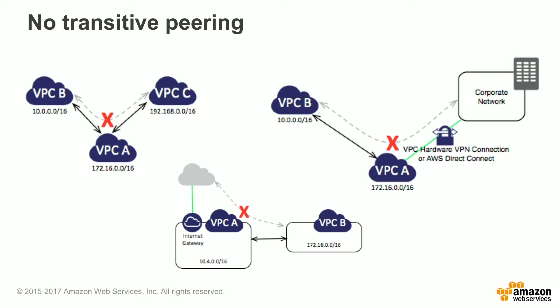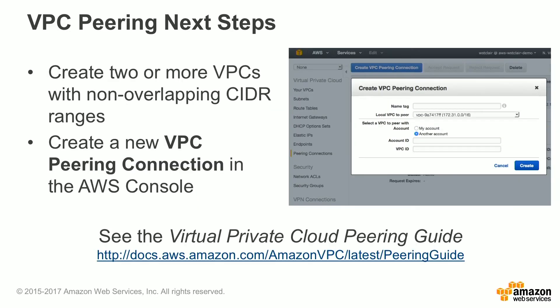Other examples where transitive peering will not work include going from your corporate network through VPC A to get to another VPC. For next steps with VPC peering, create two or more VPCs with non-overlapping CIDR ranges, then go into the console or through the API and create a new VPC peering connection.